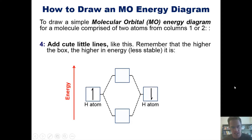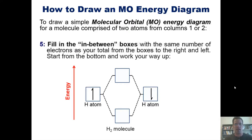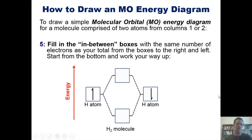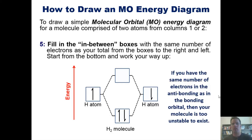That lower energy of the bonding orbital provides an energetic incentive for the molecule to form at all. Step five: fill in the molecular orbital boxes with the same total number of electrons from the combined atomic orbitals, filling from the bottom up. In the case of H₂, one electron from each hydrogen atom gives two total electrons — fill the bonding orbital with two. That is a complete molecular orbital energy diagram for H₂. Remember: if the anti-bonding orbital has the same number of electrons as the bonding orbital, the molecule is too unstable to exist.